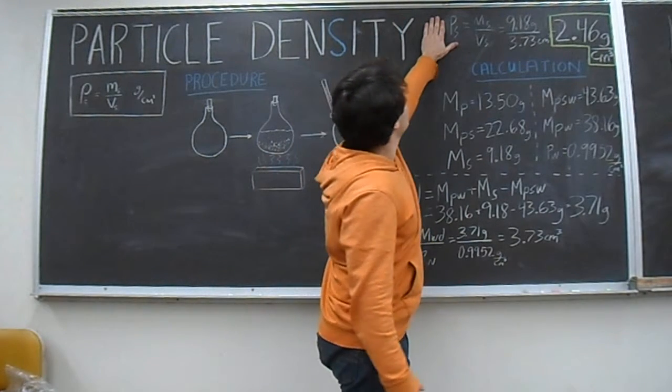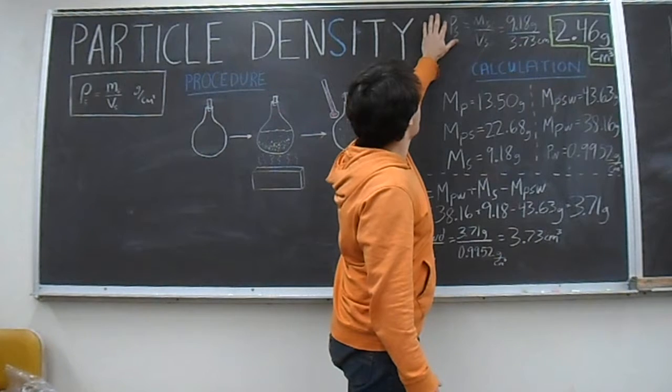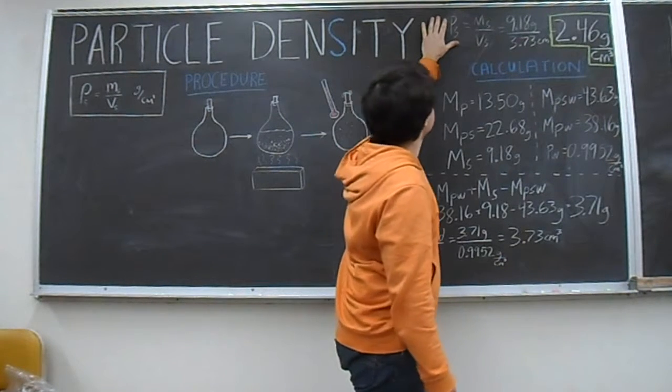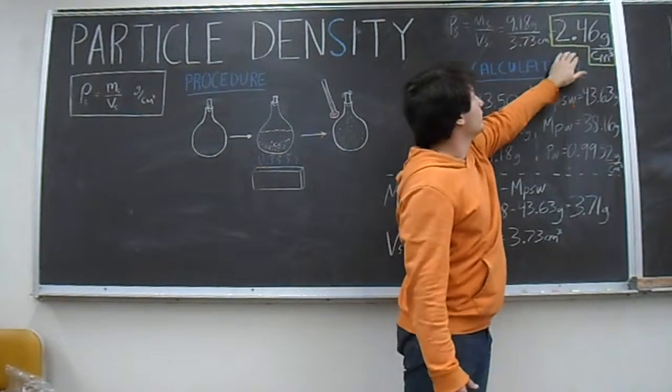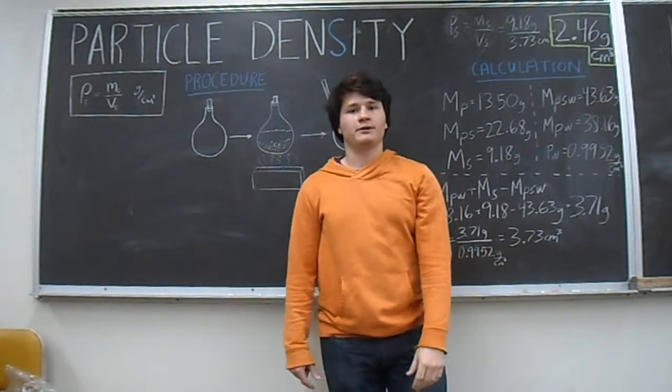After that, you bring it all together to find the thing that we're supposed to find, which is the mass of the solids over the volume of solids. It gives you a grand total of 2.46 grams per cubic centimeter.